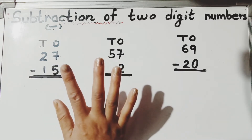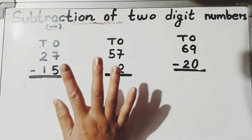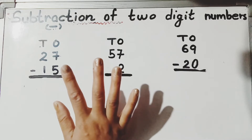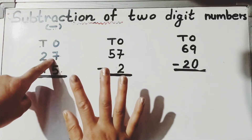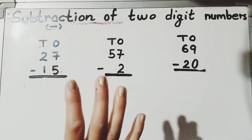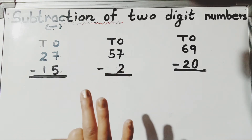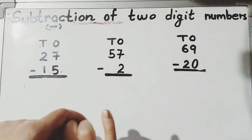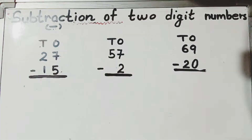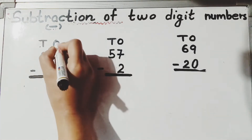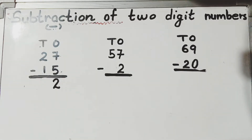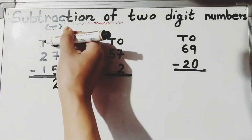Now do the backward count — count the numbers that come before the bigger number. Bigger number is seven, so: seven, then six, then five, then four, then three, then two. Seven minus five is two. Write two in the ones column.